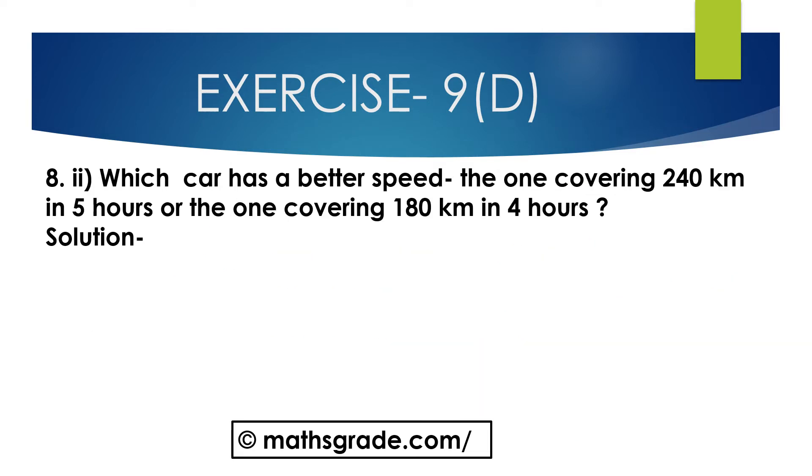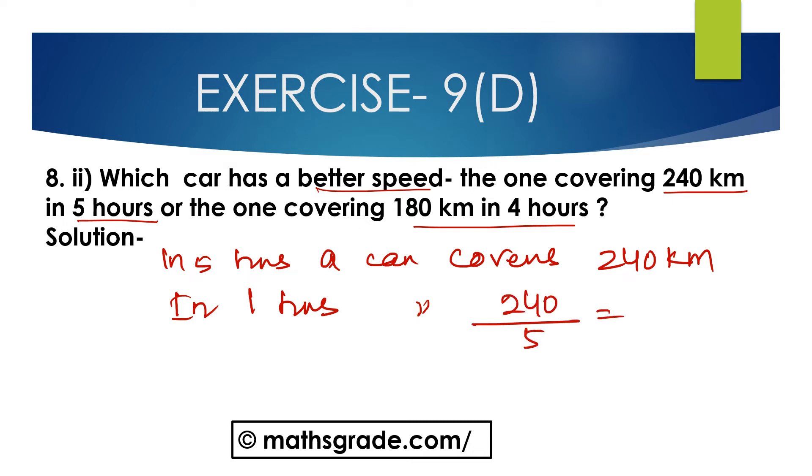Now question number 2, which car has a better speed: the one covering 240 km in 5 hours or the one covering 180 km in 4 hours? In 5 hours, a car covers 240 km. In 1 hour, a car will cover 240 divided by 5, which is 48 km.